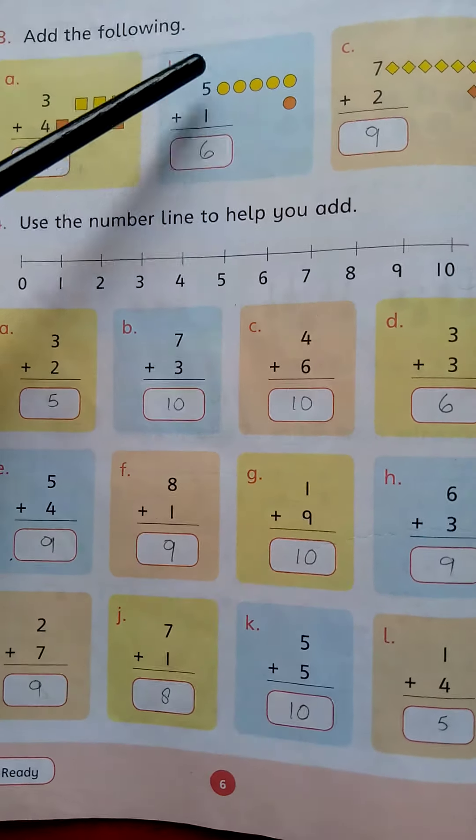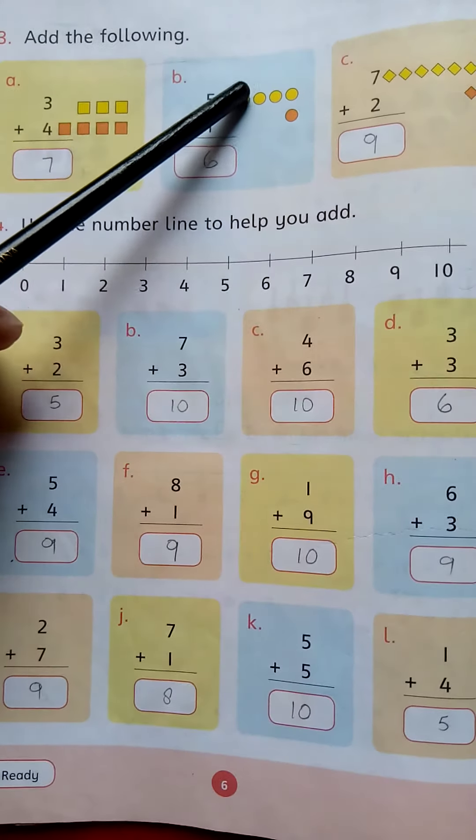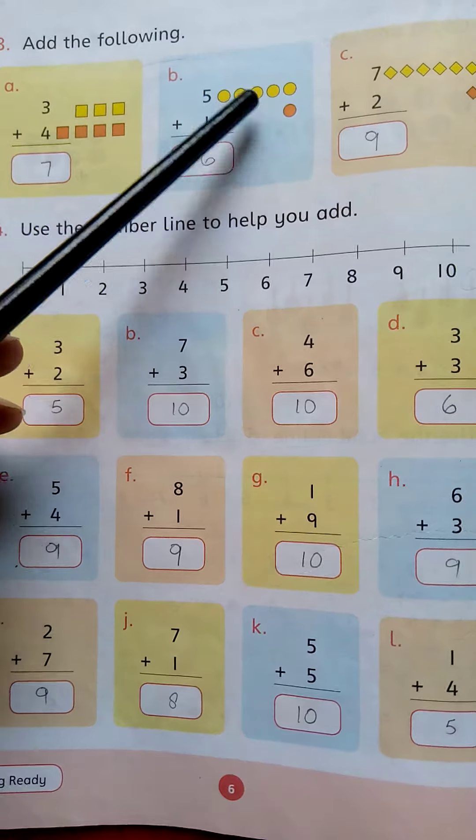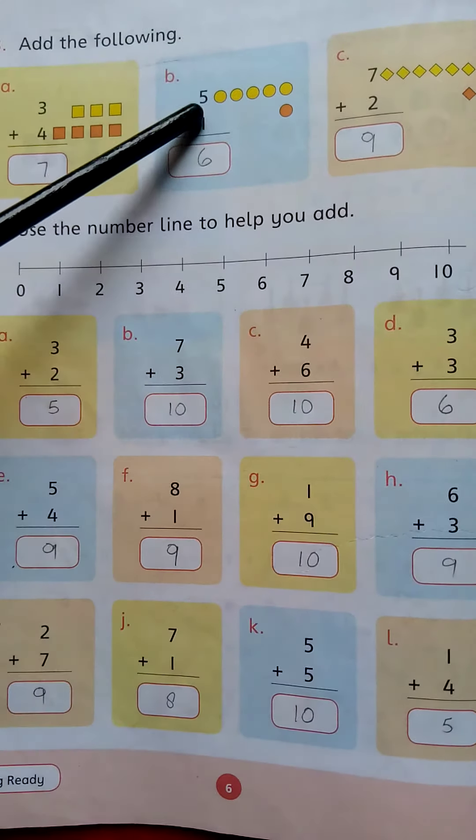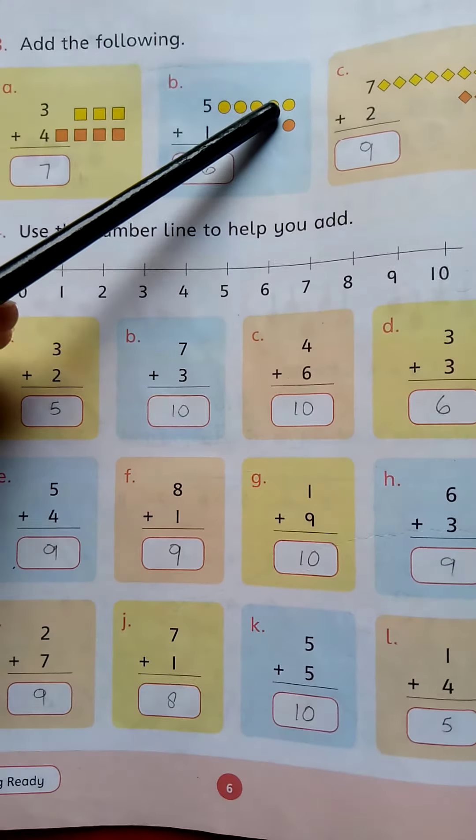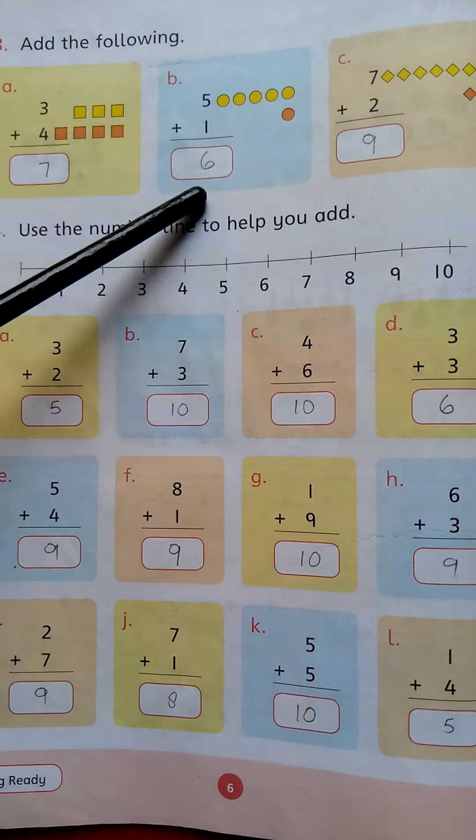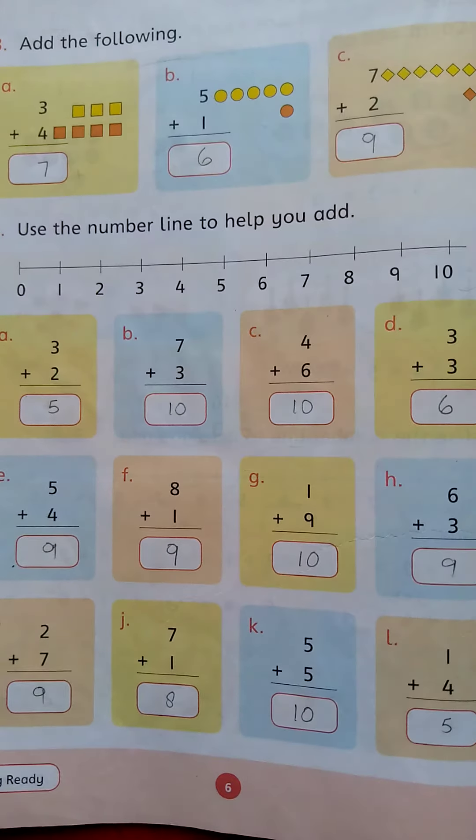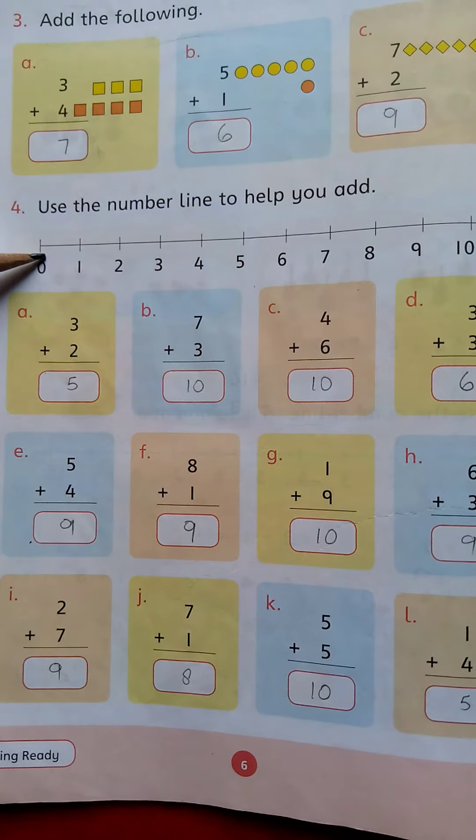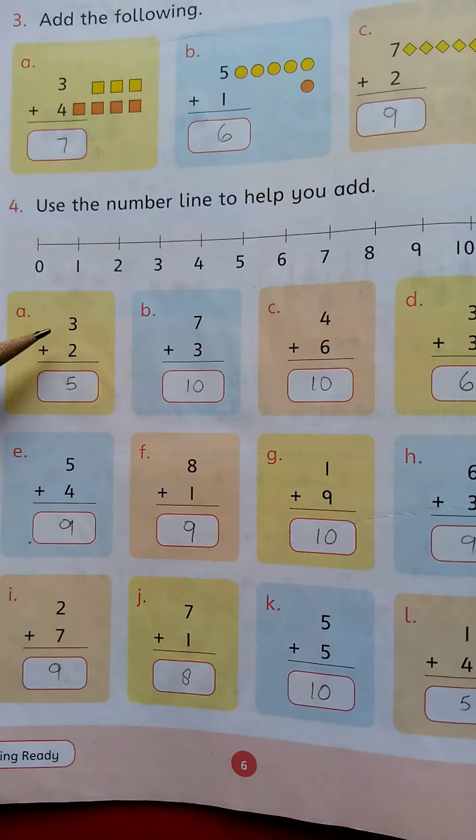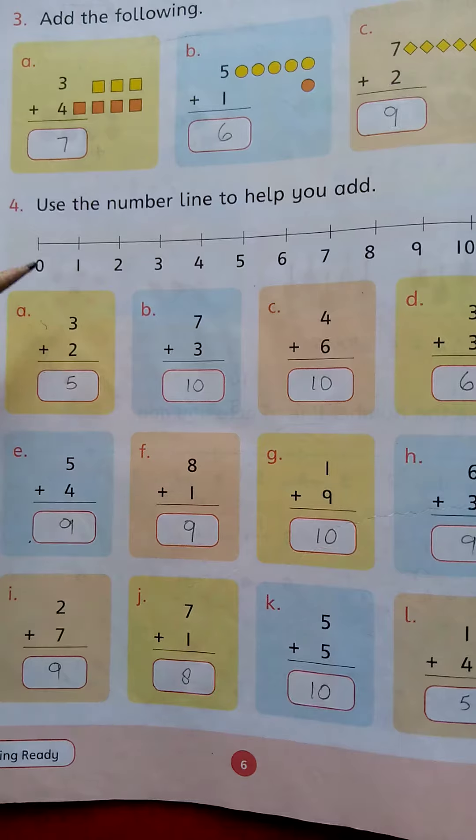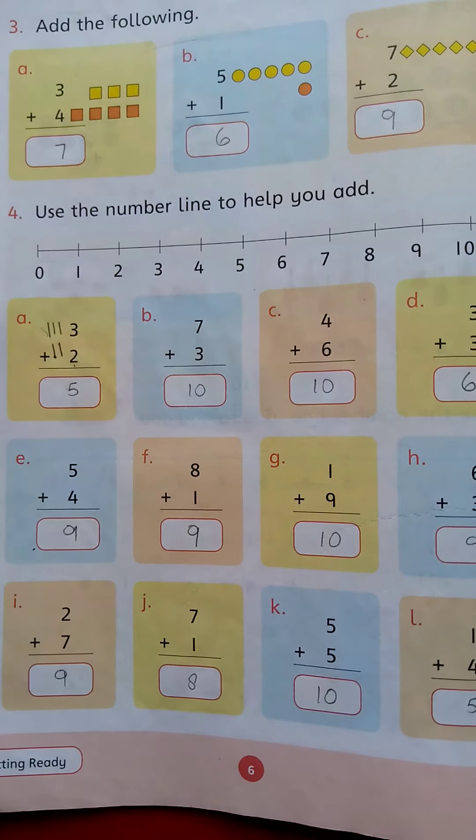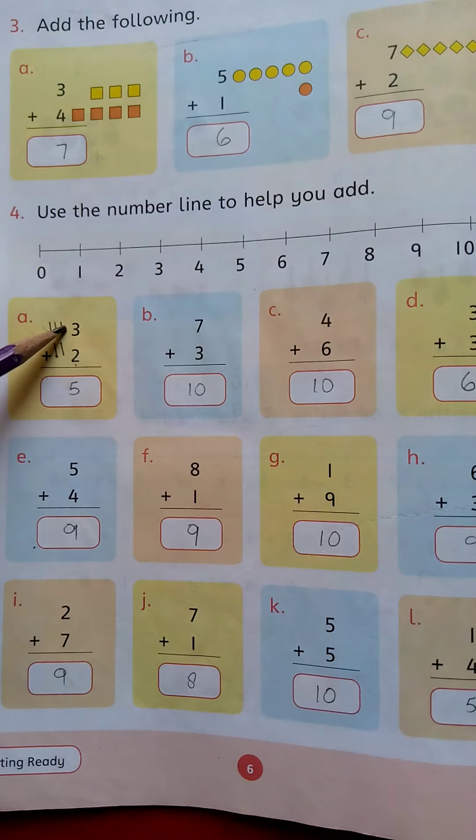First of all, we need to make 5. So we need to make 5 circles. 1, 2, 3, 4, 5.